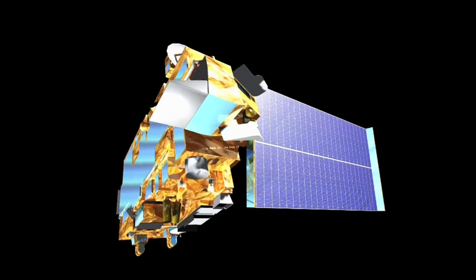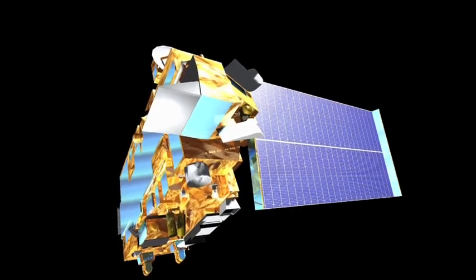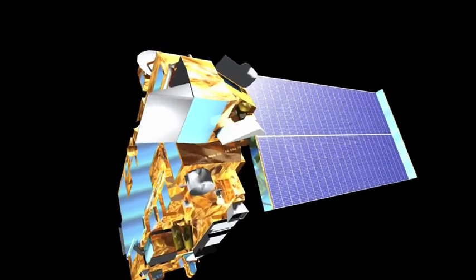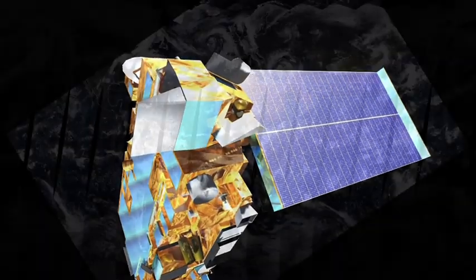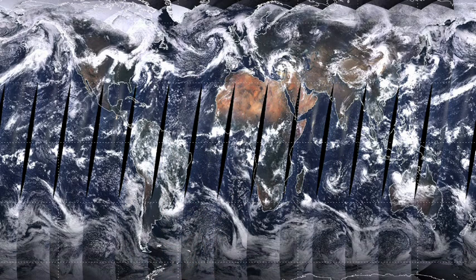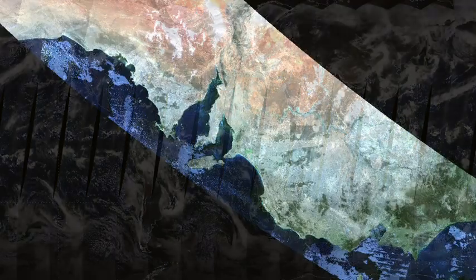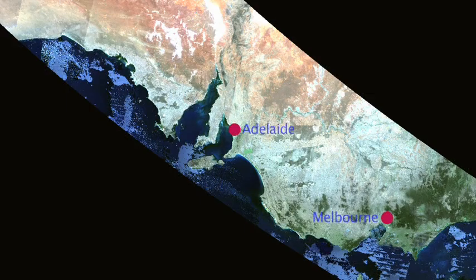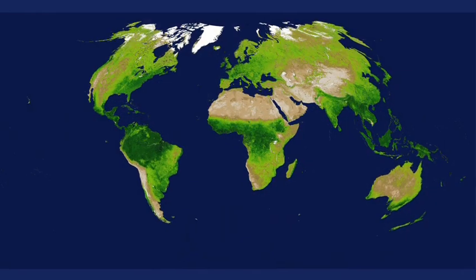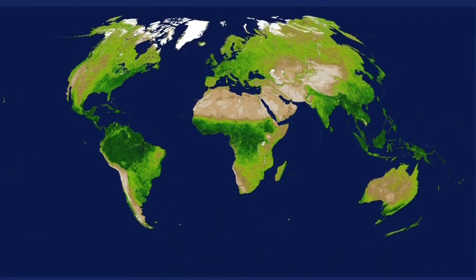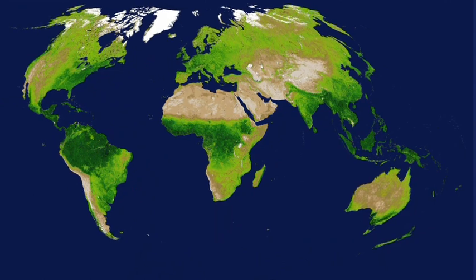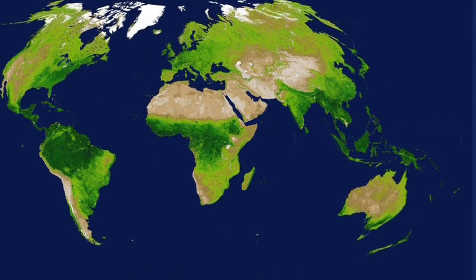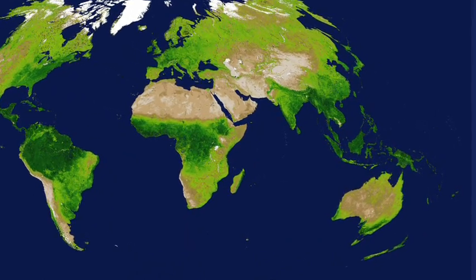We are using data from a satellite called Terra, which is owned by NASA. The satellite passes over Victoria every one to two days, providing an image that covers the whole state. This satellite carries five instruments which take images of the entire Earth's surface.